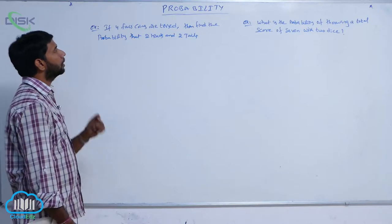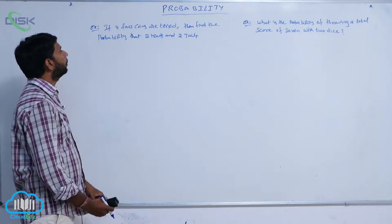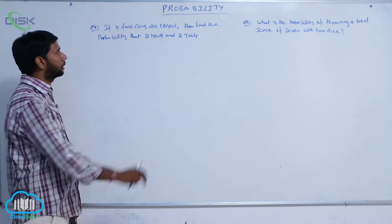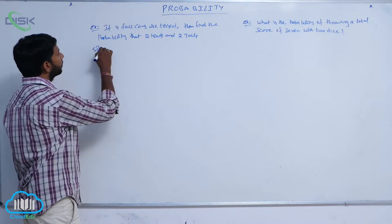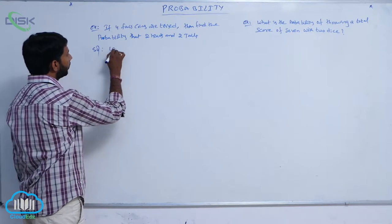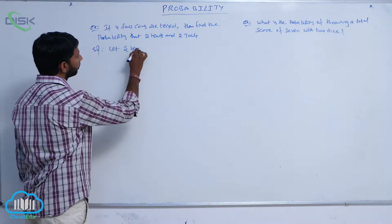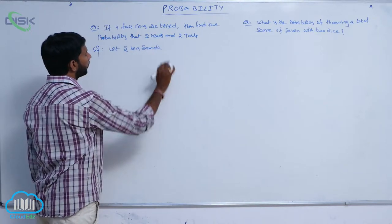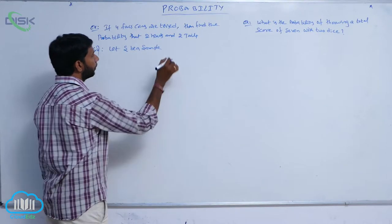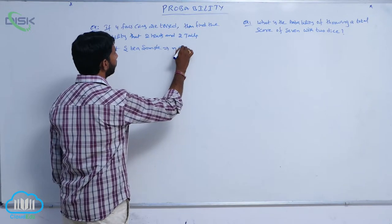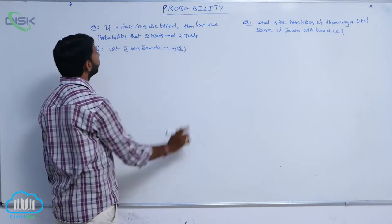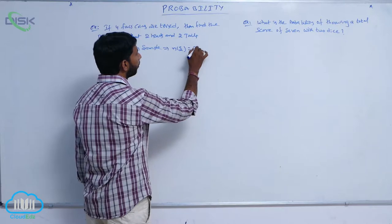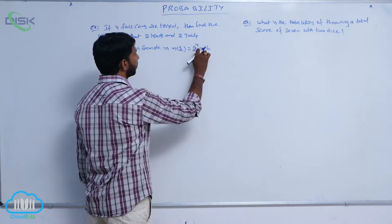If four fair coins are tossed, find the probability of getting two heads and two tails. Let S be the sample space. Here four coins are tossed, so n(S) is equal to 2 to the power 4, that is equal to 16.